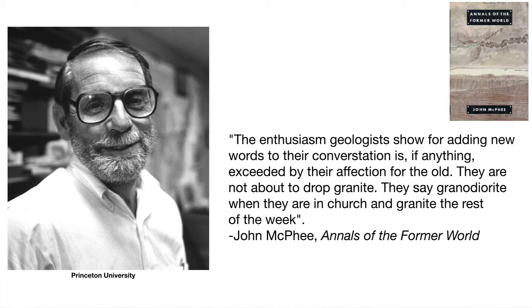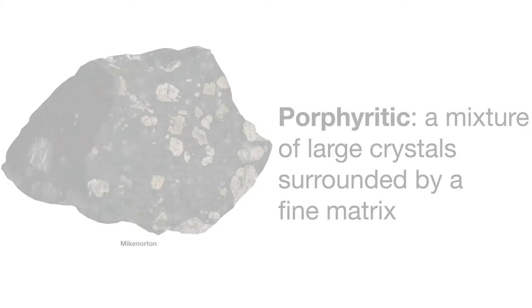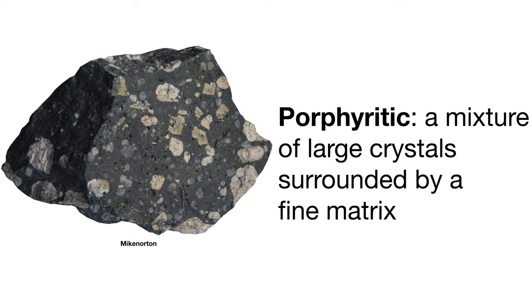Why don't geologists just say fine-grained and coarse-grained instead of aphanitic or phaneritic? Honestly, we do — it's just not technically correct. Geologists love coming up with names for stuff, and we're not going to let a word already existing get in the way of that. For example, this used to be called a granite, and now it's called a granodiorite. The American author John McPhee summed it up best: "The enthusiasm geologists show for adding new words to their conversation is, if anything, exceeded by their affection for the old. They are not about to drop granite. They say granodiorite in church and granite the rest of the week." So — slow-cooling big grains, fast-cooling small grains. What about something intermediate? In geology, we have a word for that too: porphyritic. This is a texture with both large grains and small grains, and can represent a more complex magma history than simply fast or slow. Aphanitic, phaneritic, porphyritic — these are words we use to describe the texture of igneous rocks.